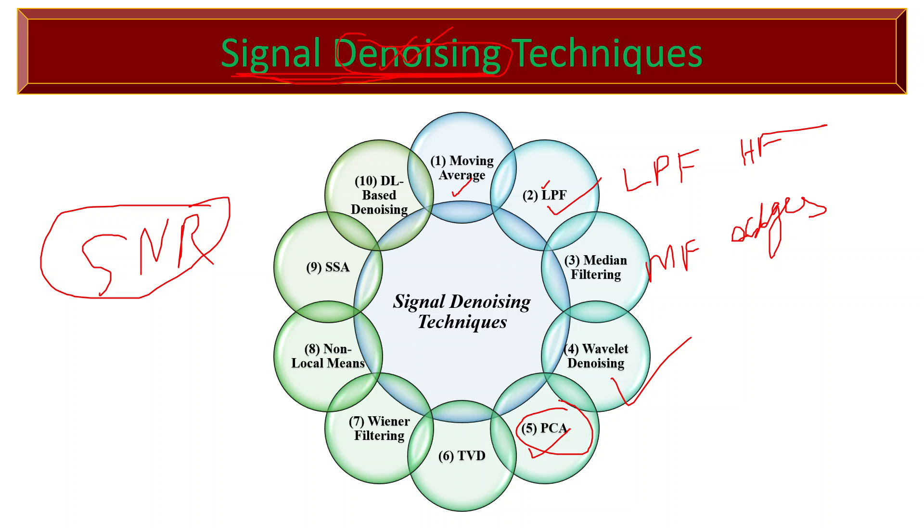PCA, or Principal Component Analysis, is a statistical technique used for signal denoising. It involves transforming the signal into a new coordinate system and removing noise by discarding principal components associated with the noise.